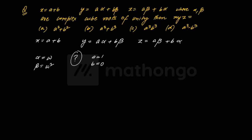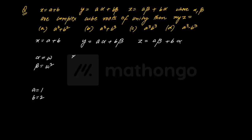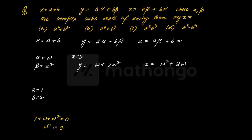Aur b ko 0 le lunga - isse par problem kya hogi, notice karo isse is problem ko lene se a option, b option dono same ho jaayengi, in fact c option bhi same ho rahi hai, toh isko lene ka koi faayda hi nahi. Similarly agar aap sochte hain a ko 1 aur b ko 1 le loon toh bhi a aur b option phir se dono barabar hain. Toh hum ek aisi value lenge jinse hum options ko bhi differentiate kar payein. Toh maine kya kiya - a ko le liya 1 aur b ko le liya 2. Ab notice karo chaaro options pe. Ab seedha seedha solve karna shuru karte hain - x ki value 3 aa gayi. y kitna ho gaya - a ko 1 maana, omega; yeh kitna ho gaya, 2 omega square. Similarly z kitna ho gaya - omega square, aur z bar kya ho gaya - 2 omega. Ab yahaan par thodi bahut properties toh yaad rakhni padhengi. Main paper mein ja rahe hain - 1 plus omega plus omega square = 0 hota hai, aur omega cube kitna hota hai complex root of unity - 1 hota hai.